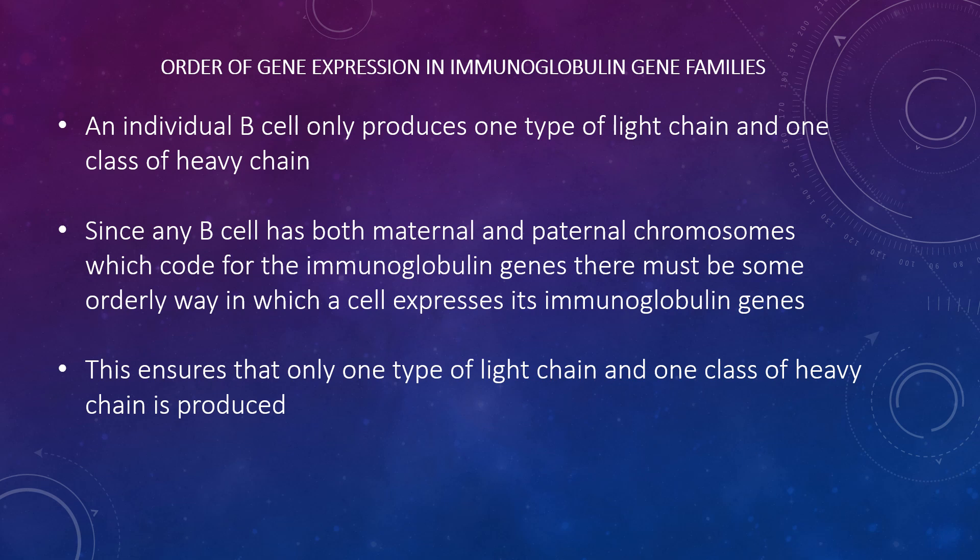An individual B-cell only produces one type of light chain and one class of heavy chain. The only exception is that a mature B-cell can produce both mu and delta heavy chains, but the antibody specificity is the same since the V-D-J region is found on both the mu and delta chains. Since any B-cell has both maternal and paternal chromosomes which code for the immunoglobulin genes, there must be a mechanism by which the cell ensures that only one type of light chain and one class of heavy chain is produced.